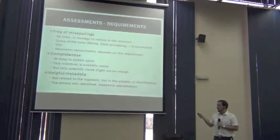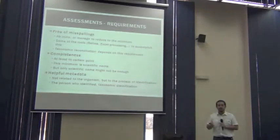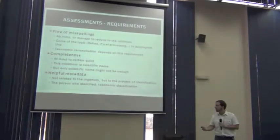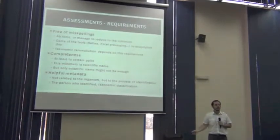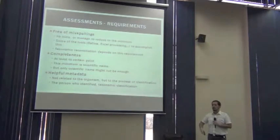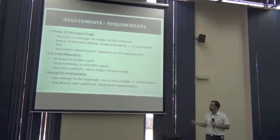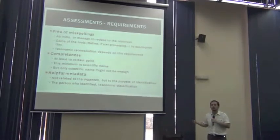Metadata that's not related to the organism, but to the taxonomic identification process. For example, having the person who identified that, the author that described the name, having the taxonomic classification that has been used, is really helpful. And sometimes it's mandatory to be able to assess and to clean all taxonomic data.